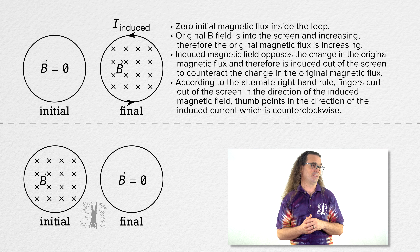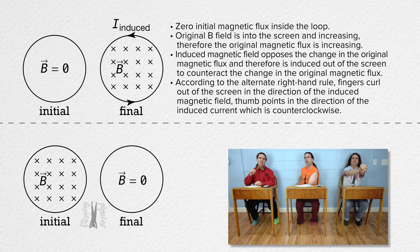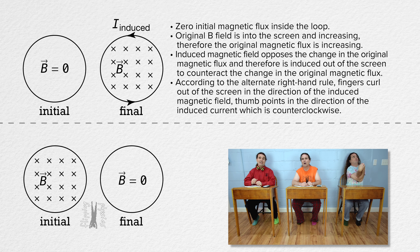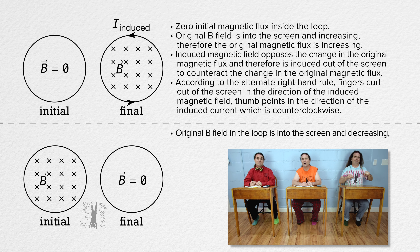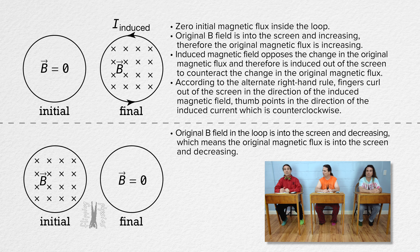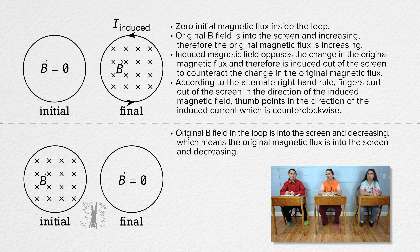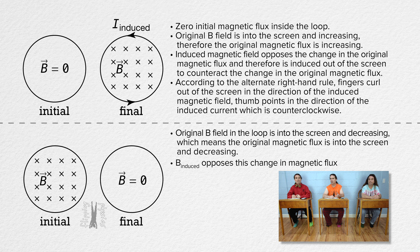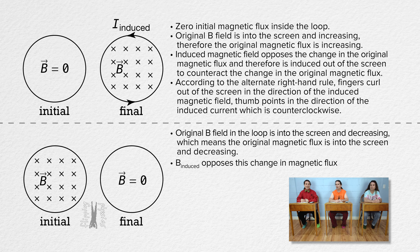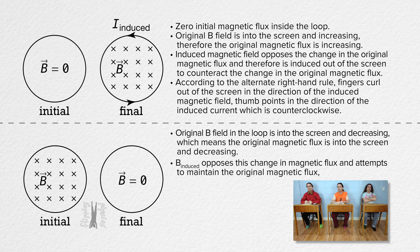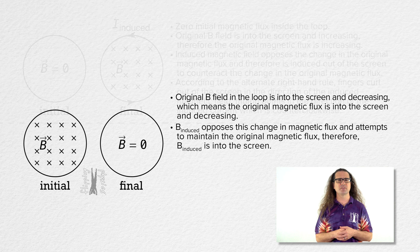That is our first example. Billy, please walk us through our second example. It looks like the original magnetic field in the loop is into the screen and there is zero final magnetic field. So the original magnetic field is into the screen and decreasing, which means the original magnetic flux is into the screen and decreasing. The induced magnetic field opposes the change in the magnetic flux. But I thought magnetic flux was a scalar — how can the original magnetic flux be into the screen if it is a scalar and does not have direction? Good point, Bobby. This is a common point of confusion.